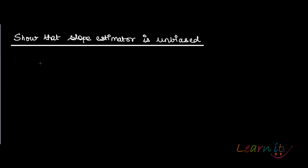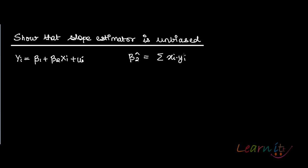Now we have to prove that the slope estimator is unbiased. We have the model yᵢ = β₁ + β₂xᵢ + uᵢ. We've already proved that β₂̂ in deviation form can be written as summation of xᵢyᵢ upon summation of xᵢ squared.